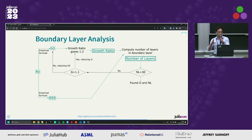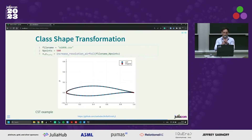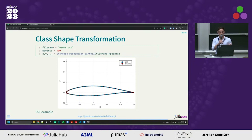There is a small optimization cycle where the code looks to have at least 30 cells inside the boundary layer and a growth ratio between 1.1 and 1.2. Finally, support has also been added for class shape transformation, which are mathematical formulations used to describe airfoils. Sometimes they are defined with not enough points, so they have a low resolution.